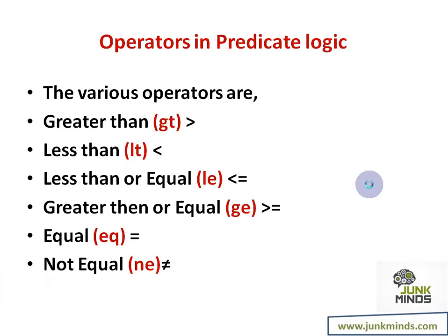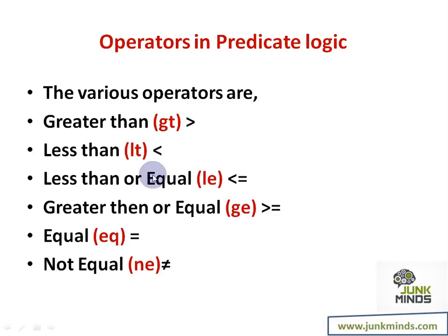Before we get on with the statements, let's understand the various operators in predicate logic. There are many different operators: greater than, less than, less than or equal, greater than or equal, equal, and not equal. Whatever you see in red in the form of brackets, those are the ones I am going to use as functions, whereas the others I will use as operators. When to use which one and what is the difference — I will discuss that as we come across examples. These are your normal mathematical operators and the meaning remains pretty much the same.